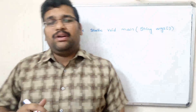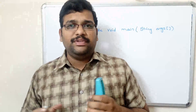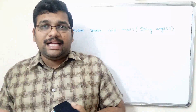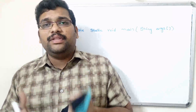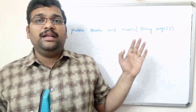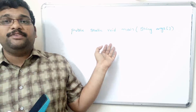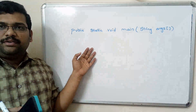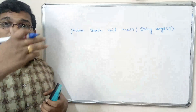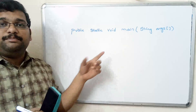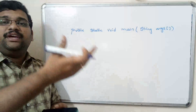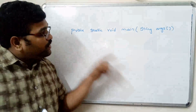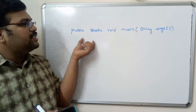In Java programming, or any programming language, execution will start from the main function. Everything we have to write in the main function — whatever classes we are creating and whatever objects we are creating, the reference should be in this main function. Unless you write the reference in the main function, the particular class or object will not be executed. In previous sessions, we are writing one class and creating objects in this main function so that we can access the variables and methods of that particular class.